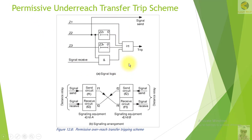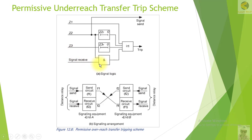Another option is that instead of using Z1B you can also use Zone 2, which can be set independently. Zone 2 can also be used in this scheme. If there is a fault in Zone 2, the signal is sent, and if the signal is received and the relay is also picked up in Zone 2 in the forward direction, then the relay will trip immediately.